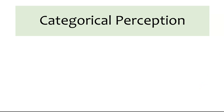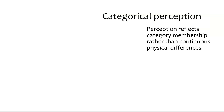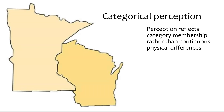In this video, we talk about categorical perception, which is one of the fundamental concepts you want to be familiar with in speech perception. The main idea is that perception reflects category membership rather than continuous physical differences. We'll get into what this means acoustically, but I'll describe this first by using an analogy with a map of Minnesota and Wisconsin.